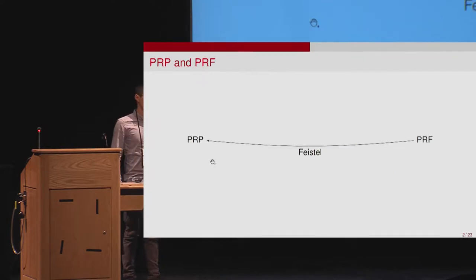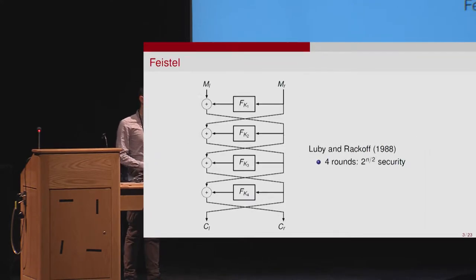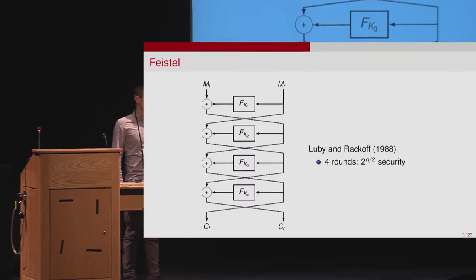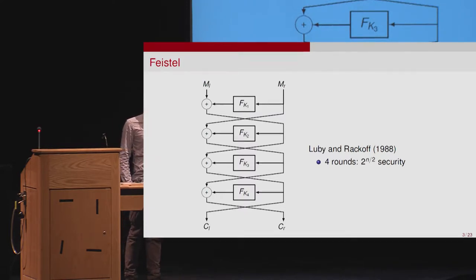In the seminal work of Luby and Rackoff, they introduced a way to design a PRP from PRFs. Their work was actually motivated by the block cipher, which consists of an R-round Feistel network. It can be shown that four rounds are sufficient to get birthday bound security.